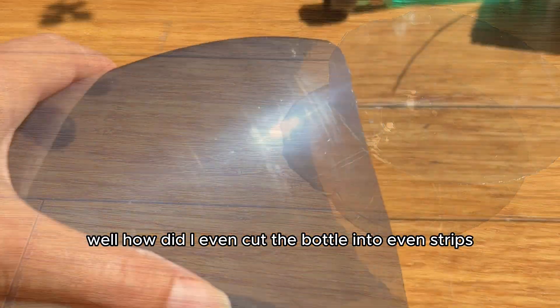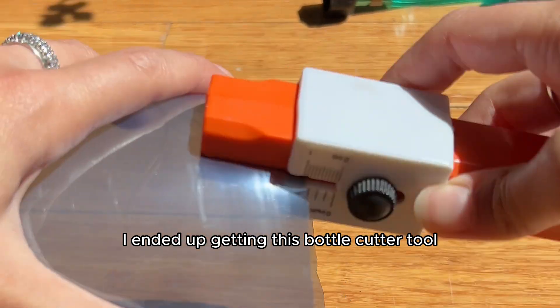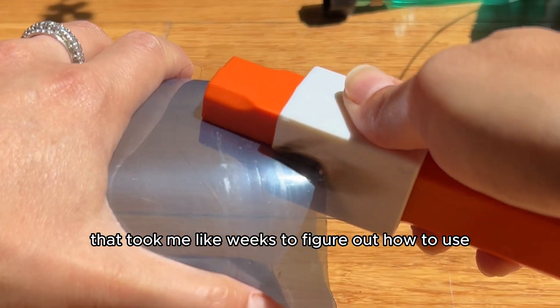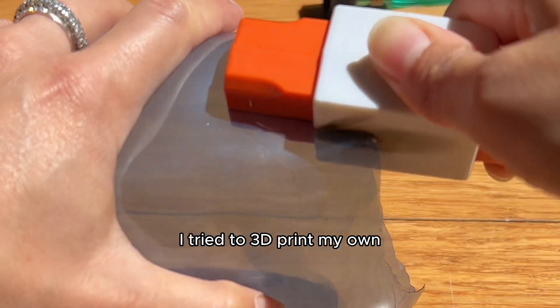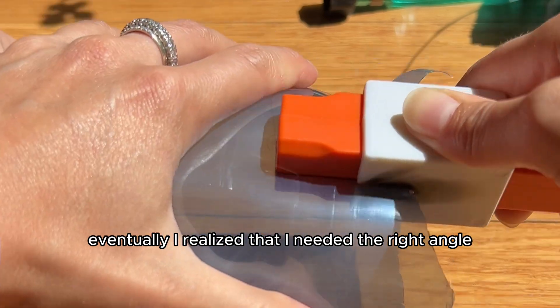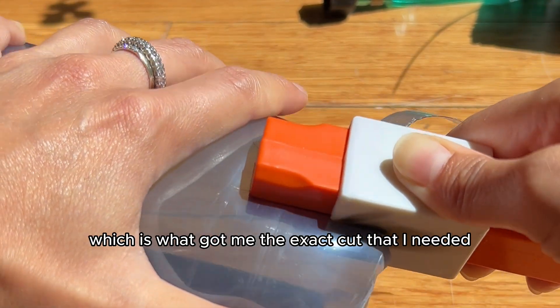You're probably wondering how did I even cut the bottle into even strips? I ended up getting this bottle cutter tool that took me like weeks to figure out how to use. It's not optimal. I tried to 3D print my own, it just didn't work as well. Eventually I realized that I needed the right angle and a slow and steady pace.